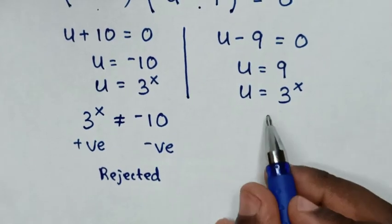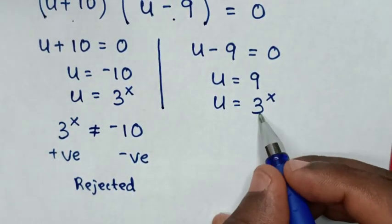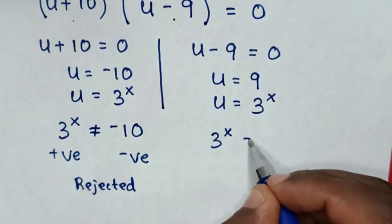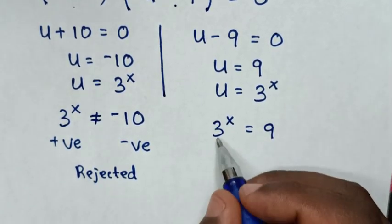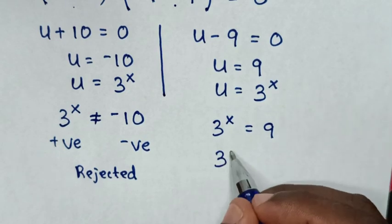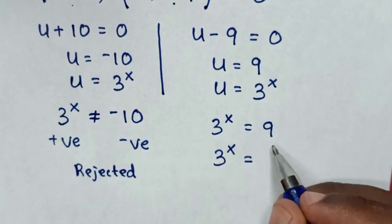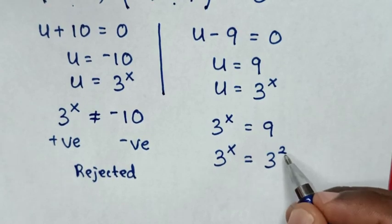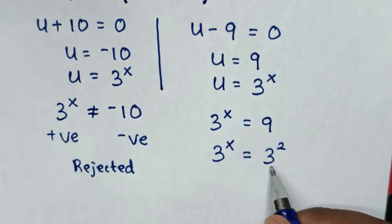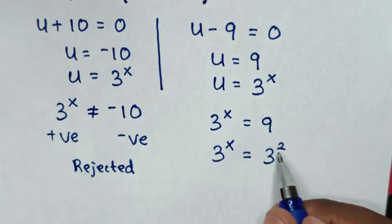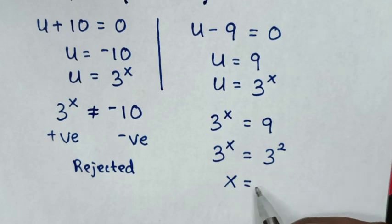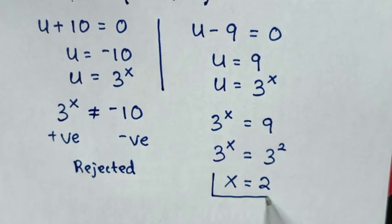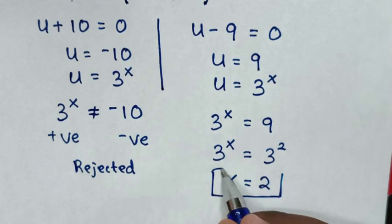For the second solution, comparing the two equations gives 3 power x is equal to 9. Since 9 is the same as 3 squared, and we have the same base of 3, we compare the powers: x is equal to 2. So this is the only solution for the value of x.